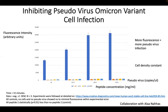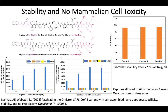We also looked at mammalian cell toxicity — it's very important to show these molecules with these peptides are not dangerous to mammalian cells. A fibroblast assay showed no danger to mammalian cells. We also looked at stability: we allowed these molecules to sit in cell culture media for up to one week, then added them to the pseudovirus and still saw the same trend — even after being in cell culture media, they can still passivate SARS-CoV-2 including the Omicron variant.